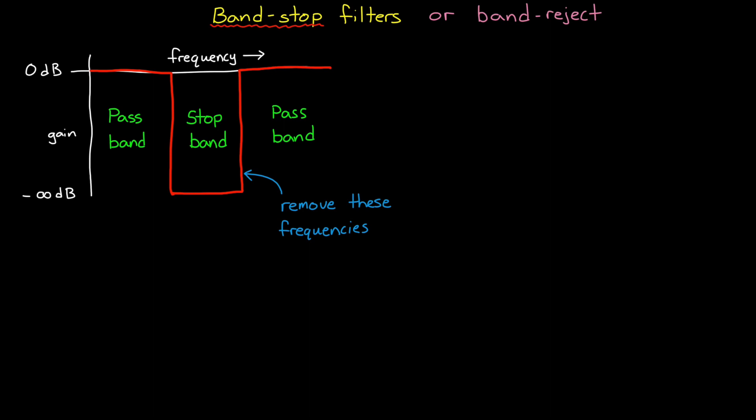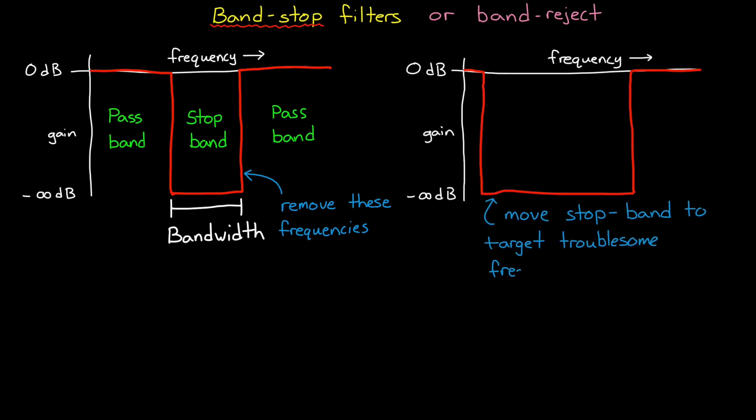The width of a bandstop filter is the distance between the lowest frequency and the highest frequency blocked. As you might expect, as filter designers we can adjust the width of the stop band and place it where we need to remove any troublesome frequencies in our signal.